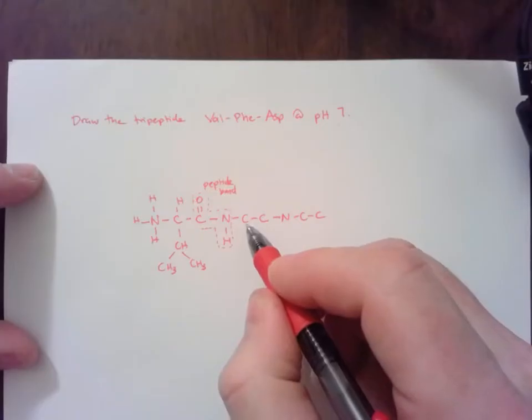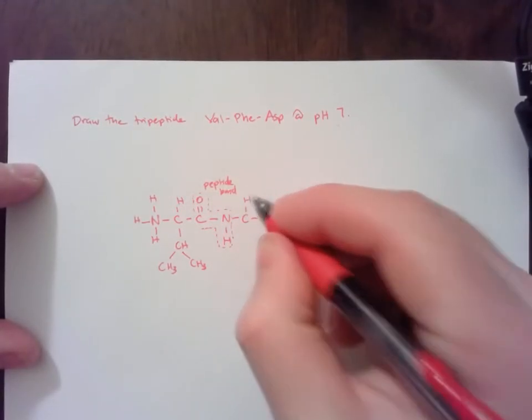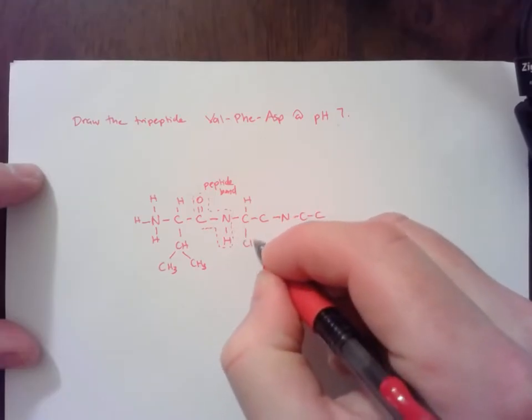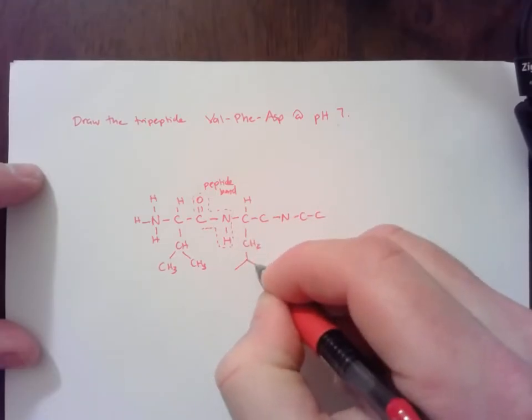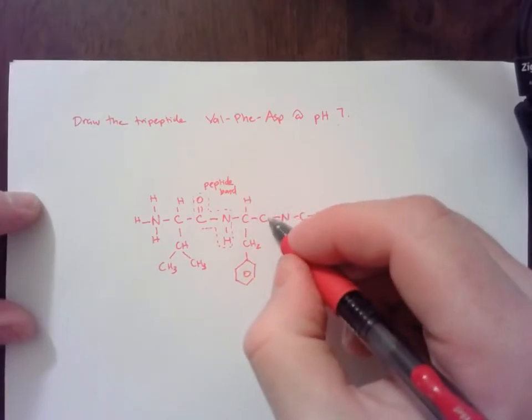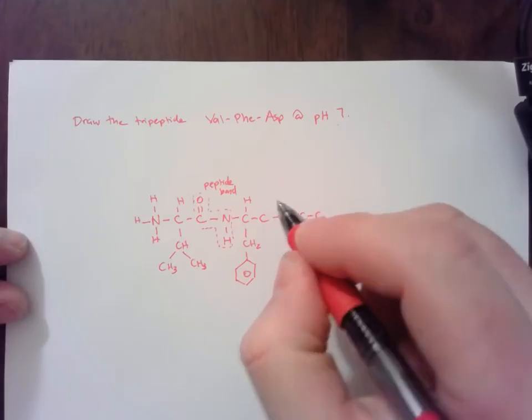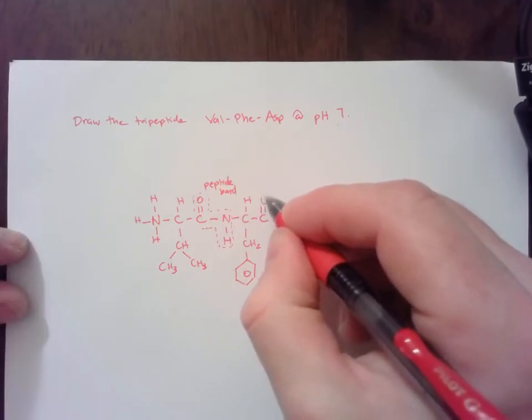And then the next carbon is the alpha carbon of the second amino acid, phenylalanine. So it's got hydrogen, and then phenylalanine looks like this. And then the next carbon has the carbonyl. So you can see the pattern here.